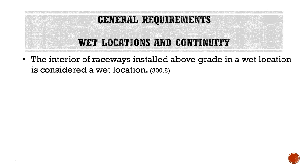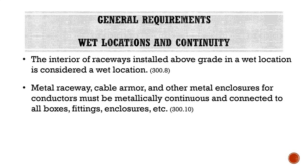The interior of raceways installed above grade in a wet location is also considered a wet location, mirroring the underground rule. Metal raceway, cable armor, and other metal enclosures for conductors must be metallically continuous and connected to all boxes, fittings, and enclosures. This ties back to Module 2 on grounding and bonding, where we discussed using different types of conduits and cables as an equipment grounding conductor.